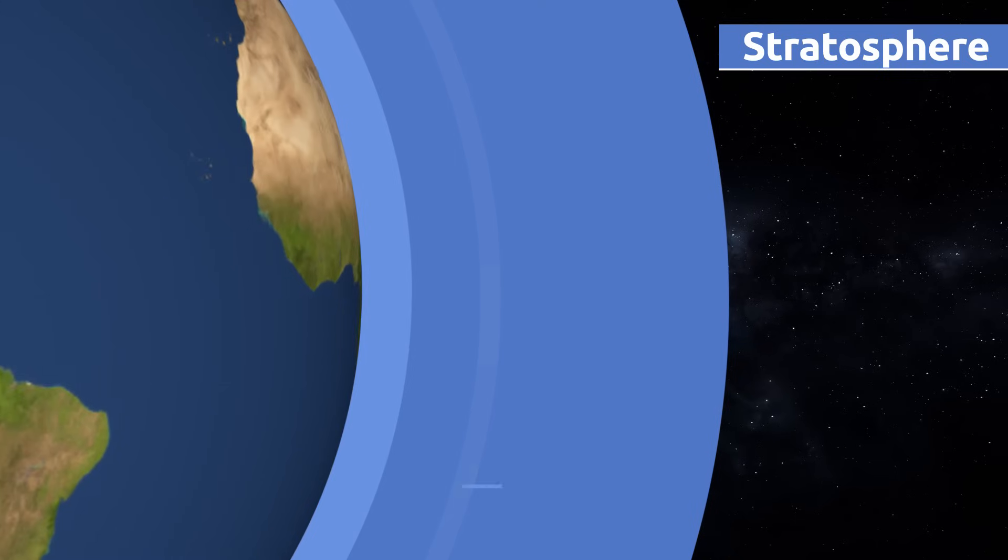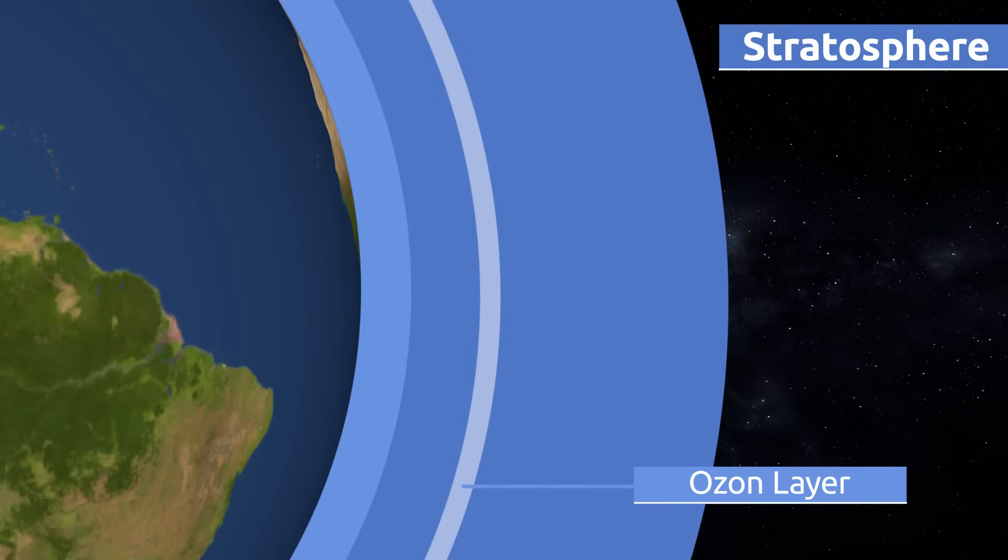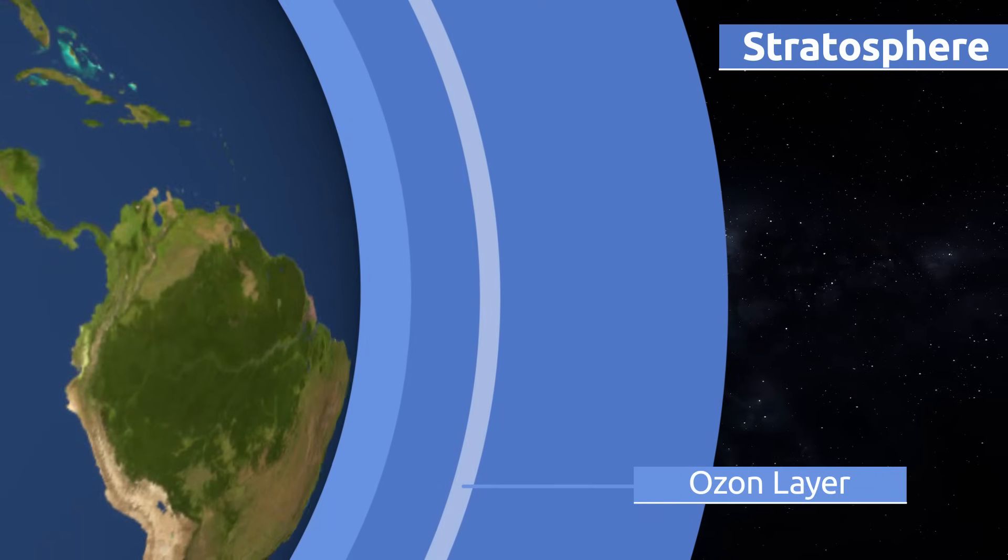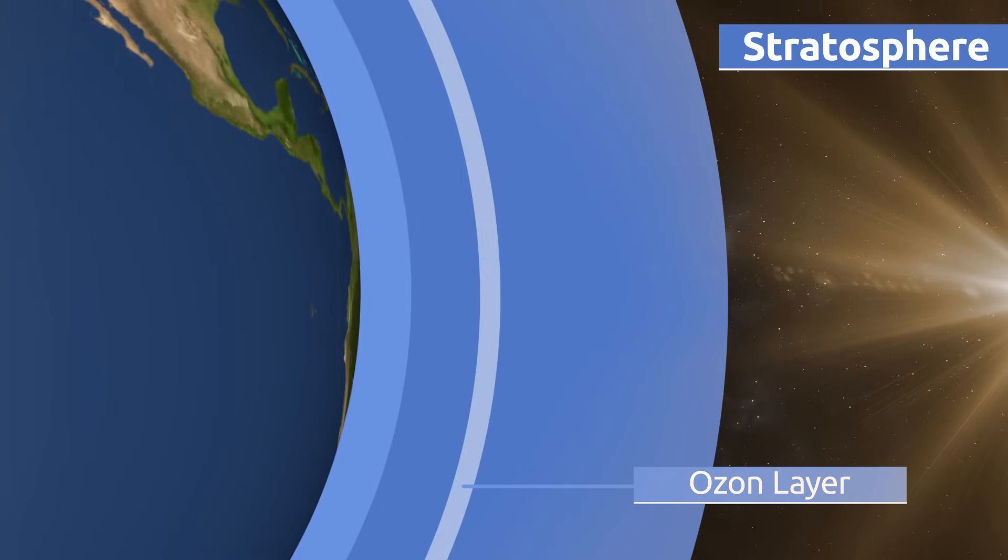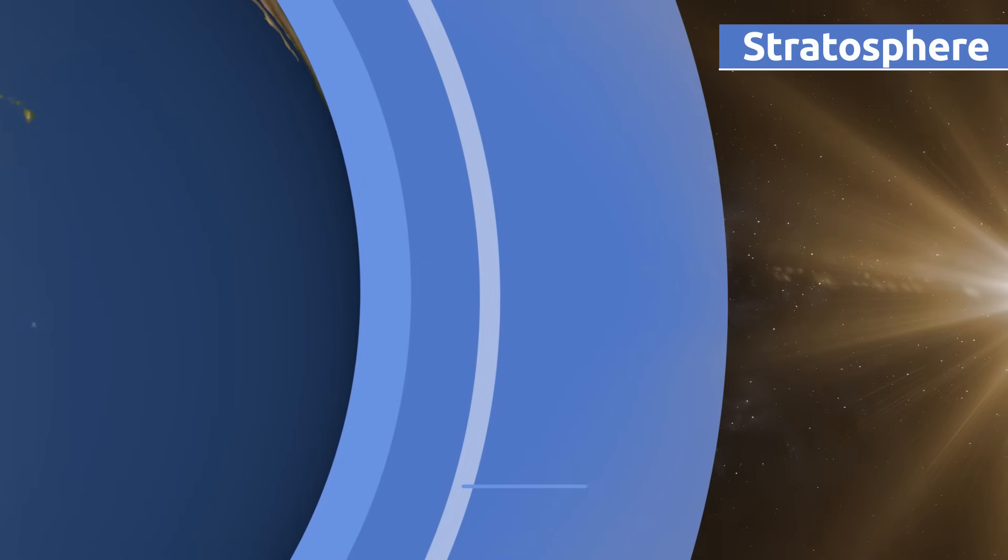The ozone layer is part of the stratosphere and it's very important because it protects our planet from harmful UV sunlight rays. The ozone layer is getting thinner and thinner as air pollution rises.